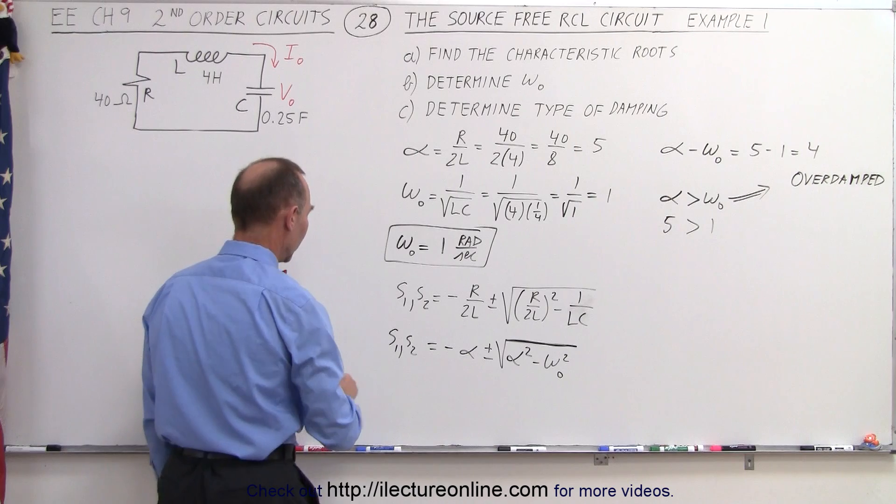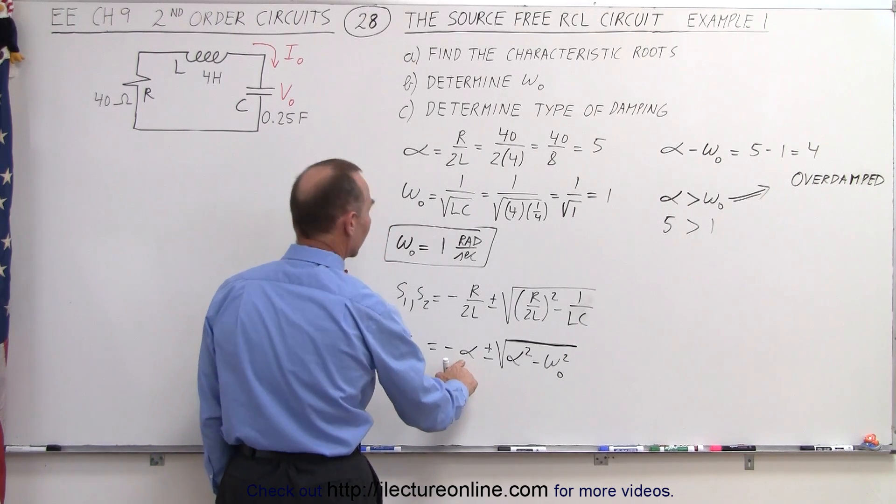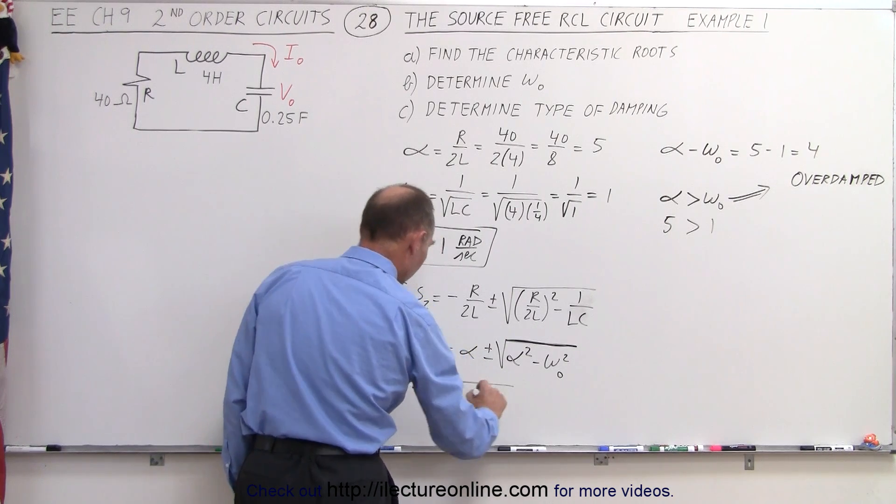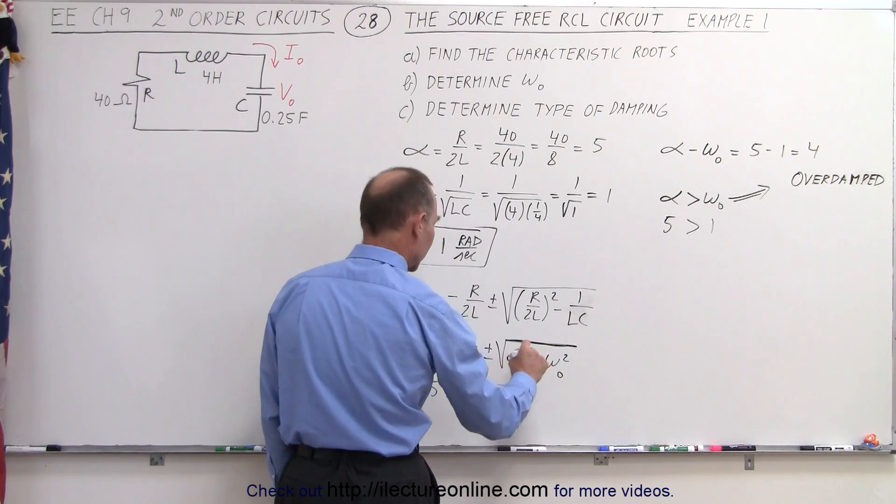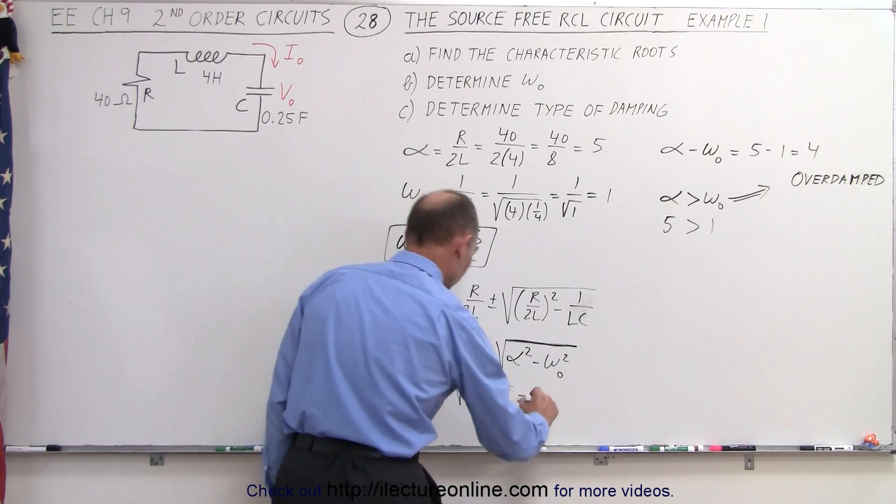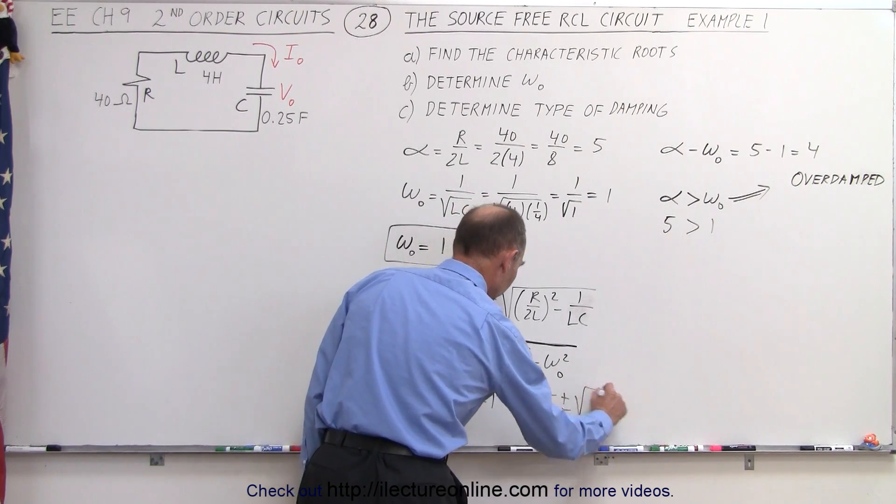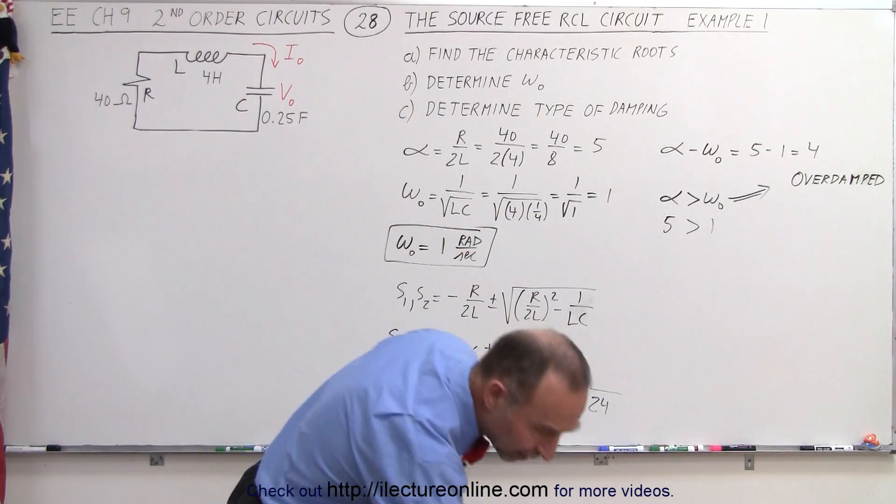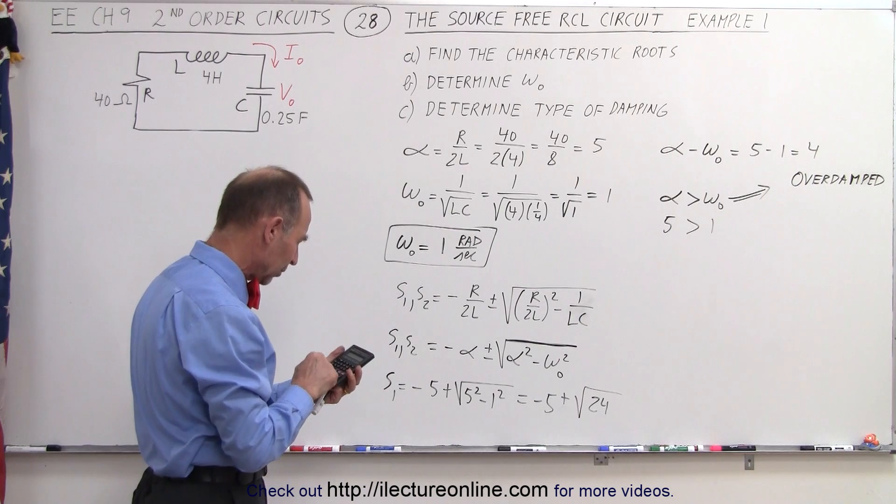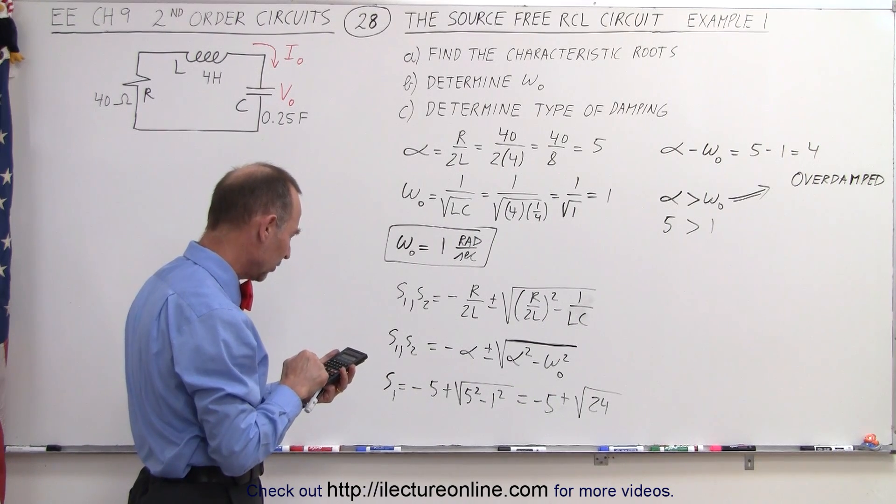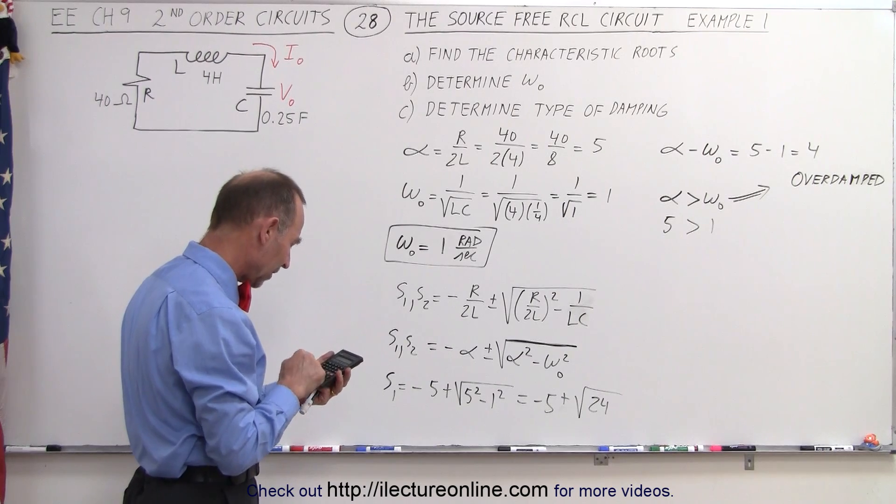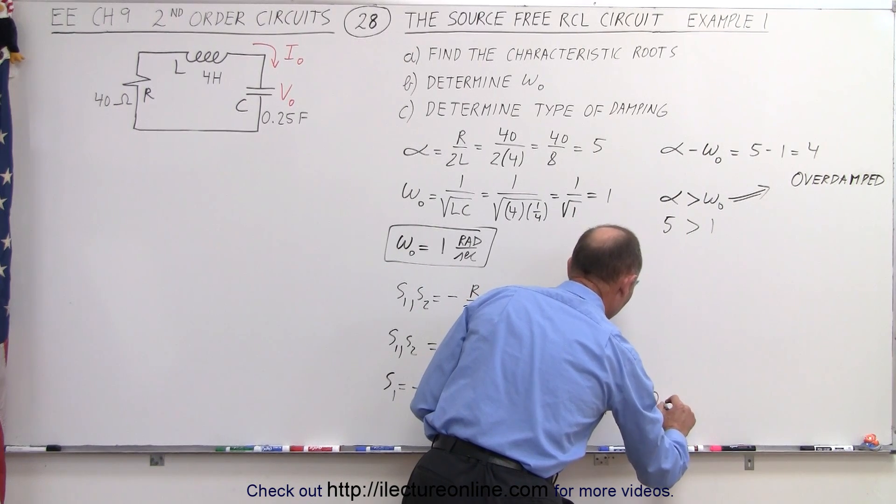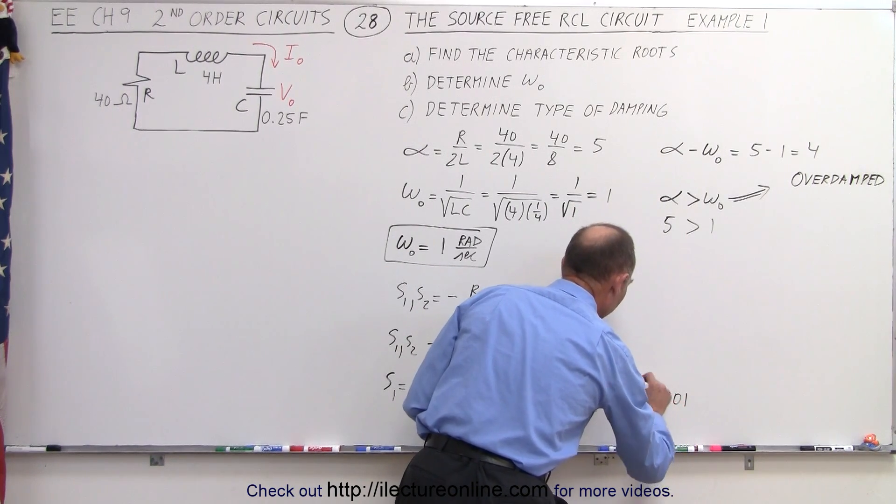So if we now plug in the values for that, we can say that S1 is equal to minus the damping factor which is 5 and that would be plus the square root of 5 squared minus the natural frequency which is 1 squared, which is equal to minus 5 plus the square root of 25 minus 1 which is 24. And it's not plus or minus, it's only the plus case. Let me find the calculator here. So we take 24, take the square root, add that to negative 5, and we get minus 0.101. So that would be the first characteristic root.